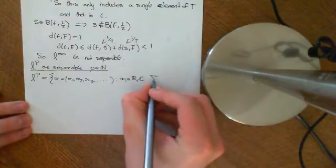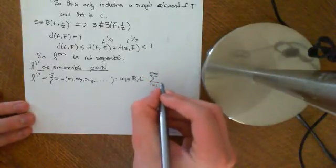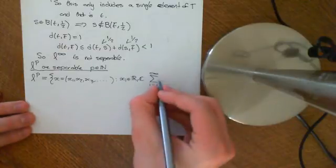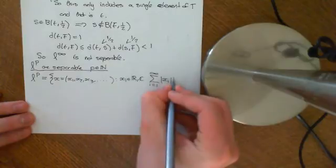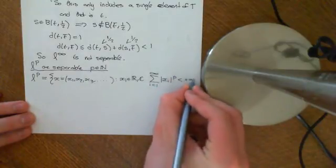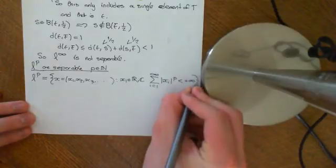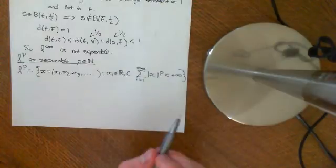And then the sequence has to have the property that the sum over i is equal to 1 to infinity, the infinite sum, infinite series rather, of the modulus of xi to the power of P needs to be finite. So it needs to be less than plus infinity. Okay, so that is the LP, the set on which the LP space is going to sit.